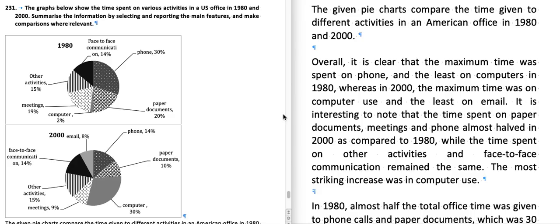Hello students, today I'm going to discuss with you a pie chart which has come in the past in the academic IELTS writing test. In fact there are two pie charts, one for 1980 and one for 2000. The graphs below show the time spent on various activities in a US office in 1980 and 2000. Summarize the information by selecting and reporting the main features and make comparisons where relevant. Two years are given which are both in the past and so you have to use the past tense.